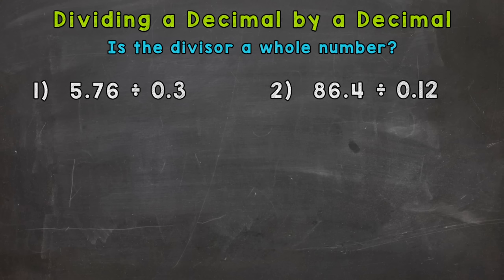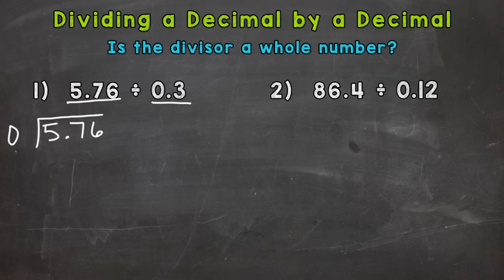Let's set our problem up. Five and seventy-six hundredths is our dividend, so it goes underneath the division bar — it's the number that we are splitting or dividing up. Three tenths is our divisor, it's the outside number.